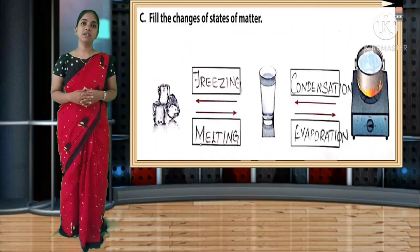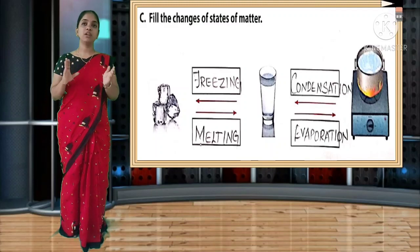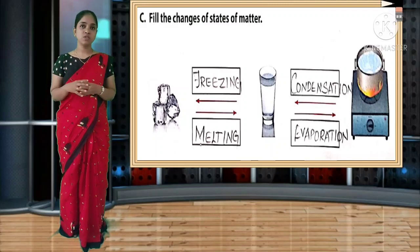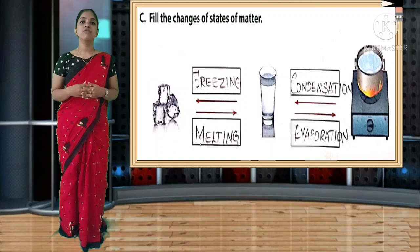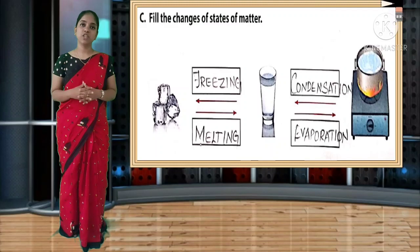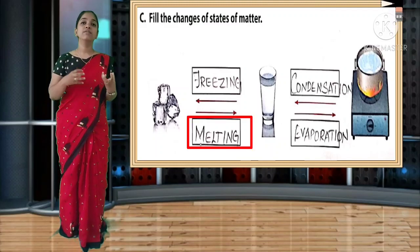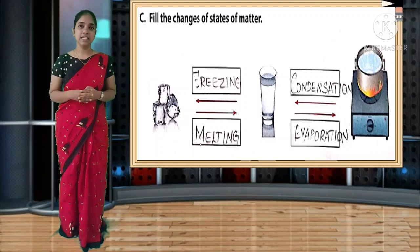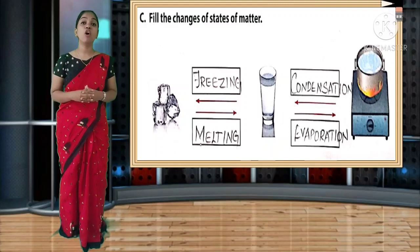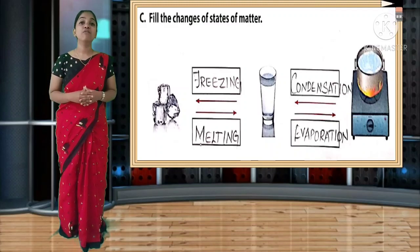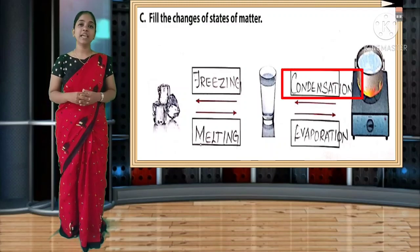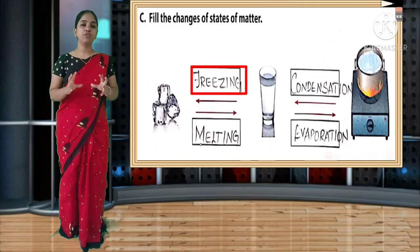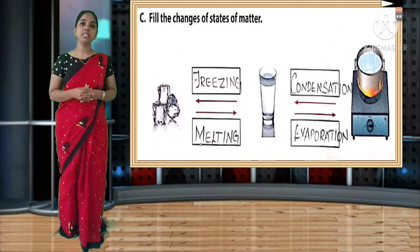Fill the changes of states of matter. You can see three features: ice cubes, a glass of water, and boiling water. From ice cubes to glass of water - it is melting. From glass of water to boiling water - it is evaporation. From boiling water back to glass of water - it is condensation. From glass of water back to ice cubes - it is freezing.